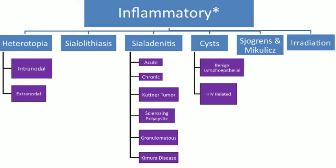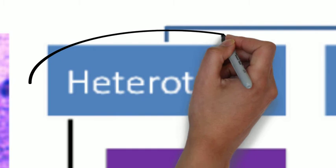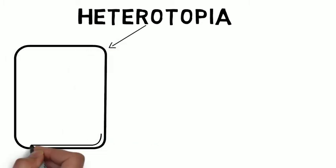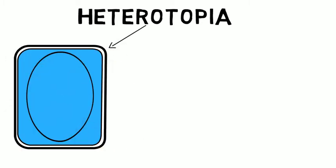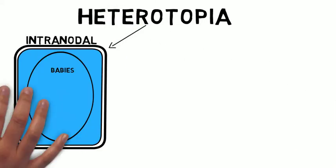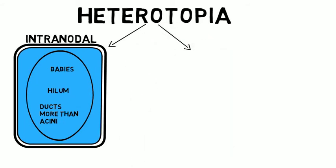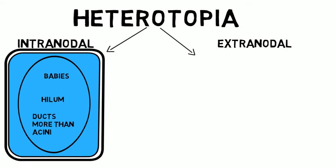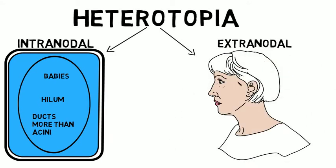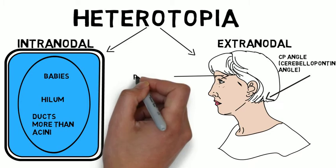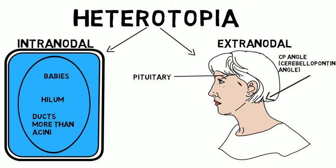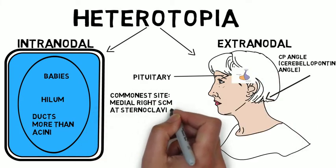We'll begin with heterotopia. Heterotopias are divided into intranodal and extranodal varieties. The intranodal heterotopias occur in babies, usually at the hilum of the node, and consist histologically of ducts more than acini. Extranodal heterotopias occur within the oropharynx and superior to it, in places as unusual as the cerebellopontine angle and the pituitary gland. The commonest site for heterotopia is the medial right sternocleidomastoid muscle, right at the sternoclavicular joint.